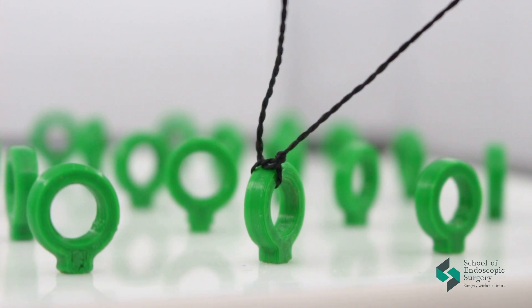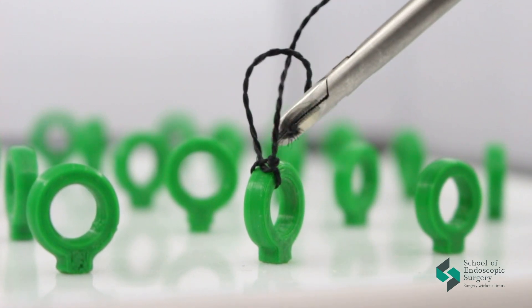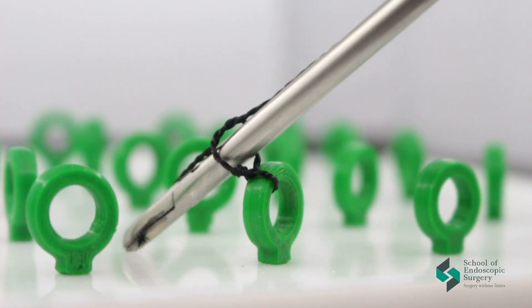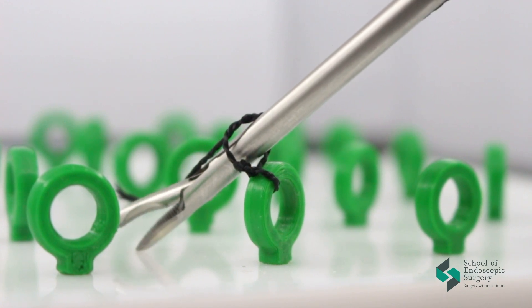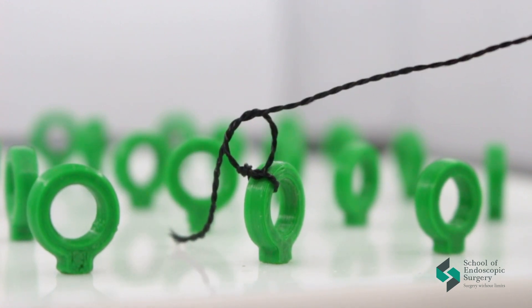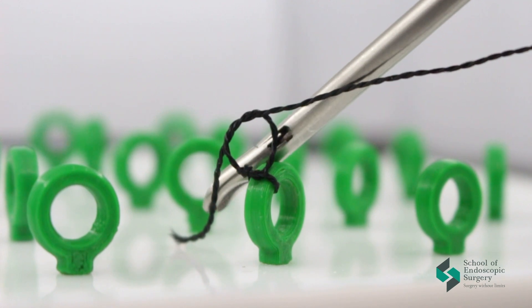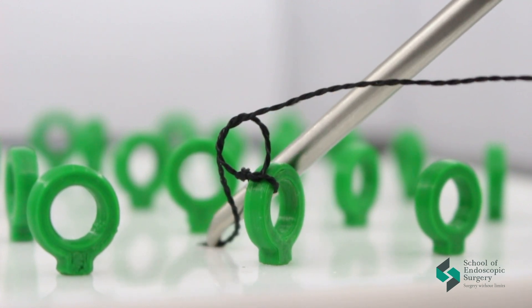Using our finger, we can feel how tight we have tightened the knot. After that, form a loop in the opposite direction. Put the thread through the loop, remove the instrument, and form a second knot by stretching the thread with your finger.